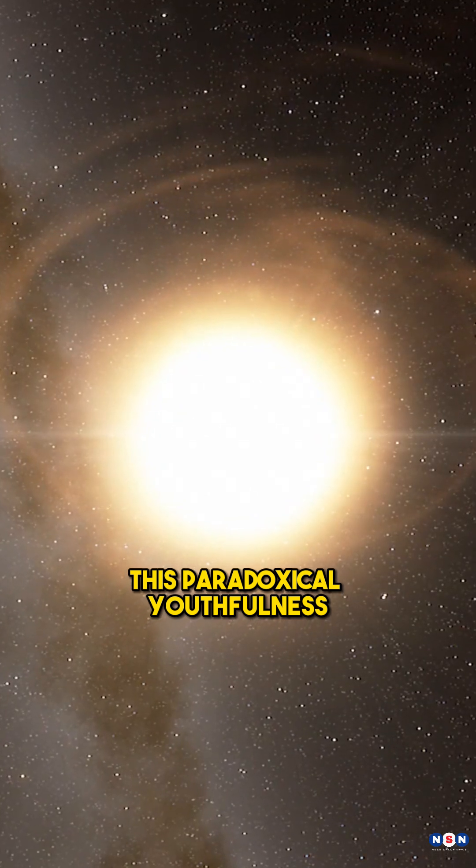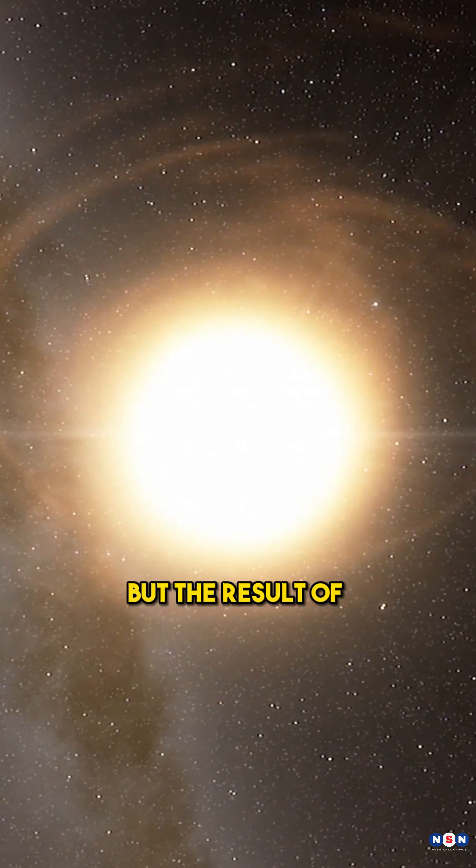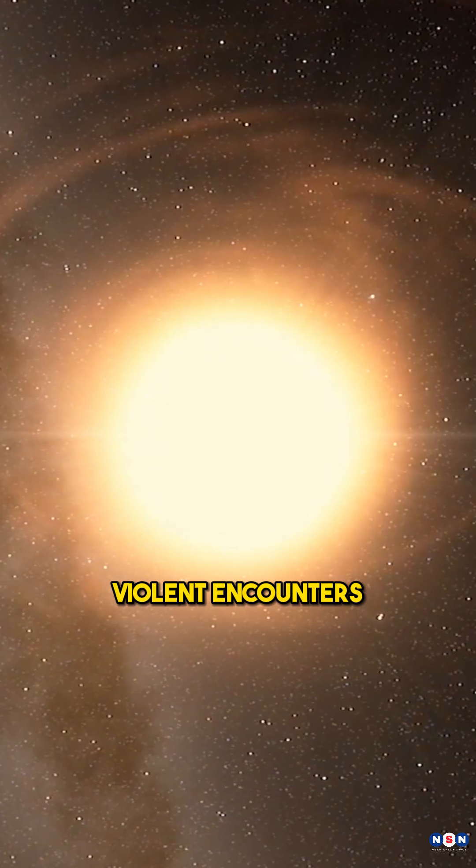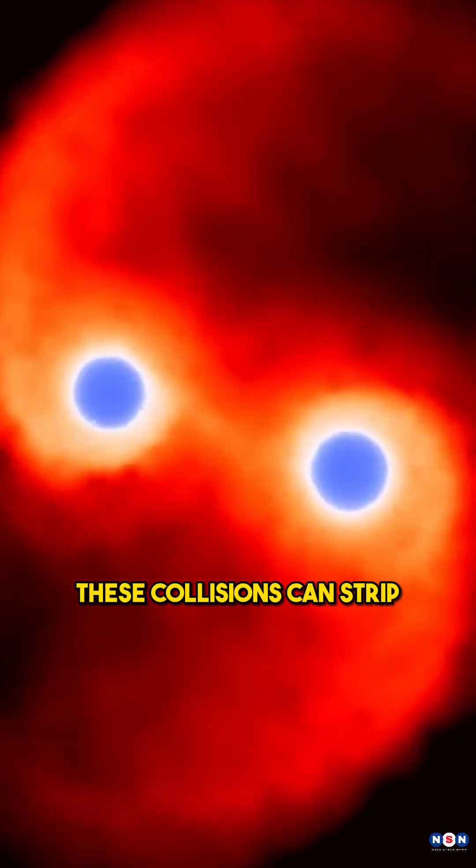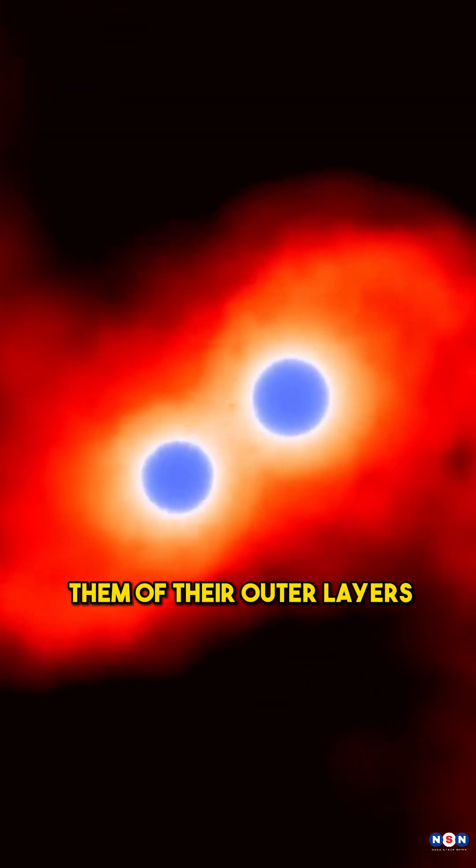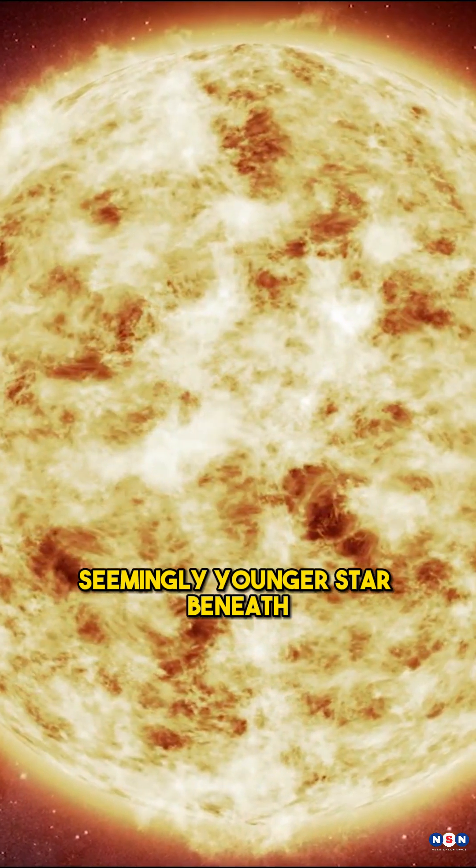This paradoxical youthfulness is not a cosmic anomaly, but the result of violent encounters. As stars orbit the black hole, they often collide with one another. These collisions can strip them of their outer layers, revealing a brighter, seemingly younger star beneath.